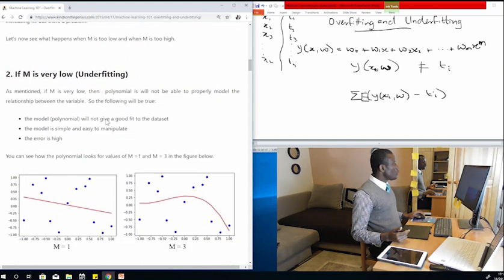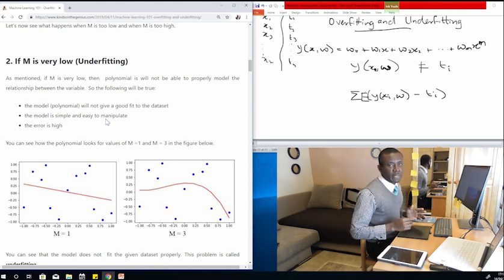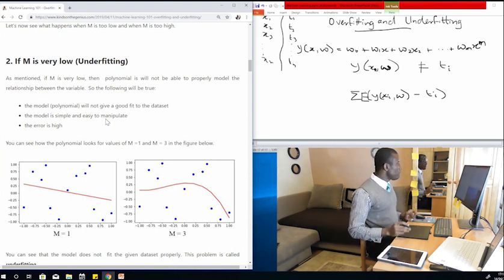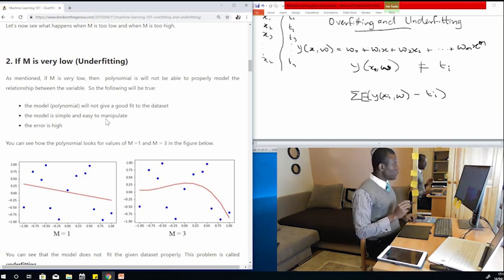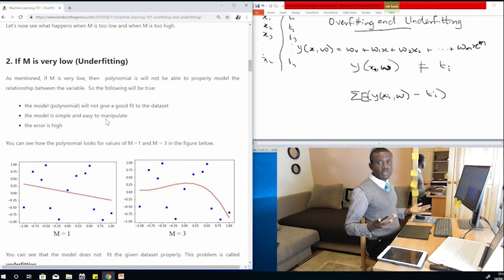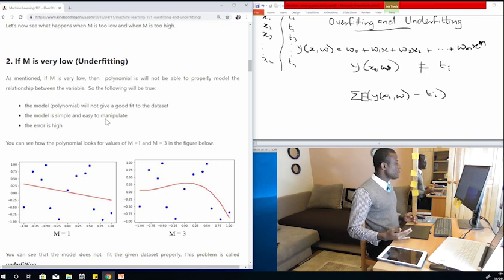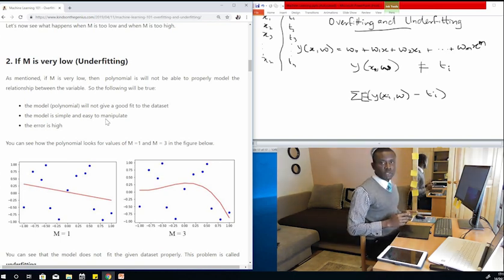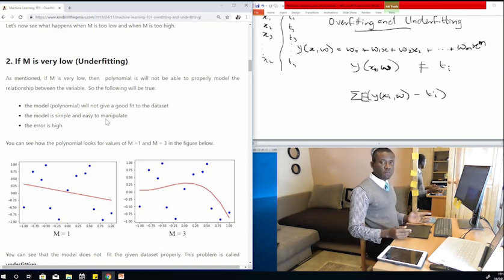Now let's see what happens when M is really very low. If the order of this polynomial you are choosing is very low, the polynomial will not be able to properly model the relationship between the variables. So assuming that M is 0, we have y equals w0, a constant. A straight horizontal line is useless when you are talking about something that might be a polynomial curve or even a trigonometric relationship.